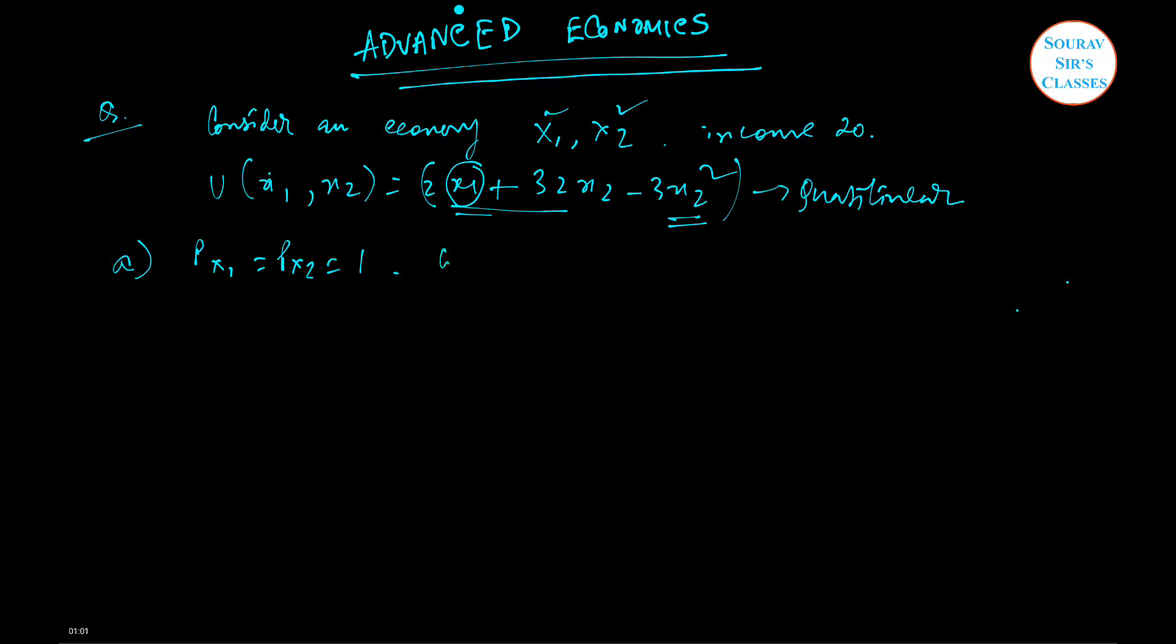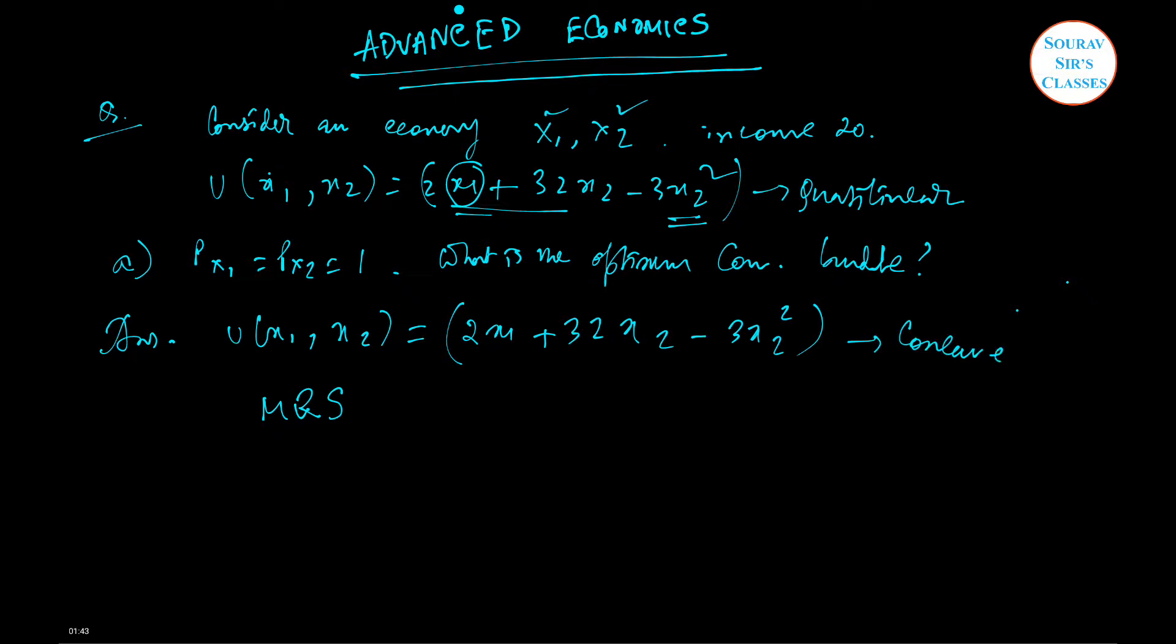Let's focus on the answer now. This function which is given is a quasi-linear function as I've already explained. In this quasi-linear function, if we try to solve, we can find the MRS and everything. Here we know MRS can be expressed as the quantity ratios, and also one thing to consider is that it is a concave function as well.